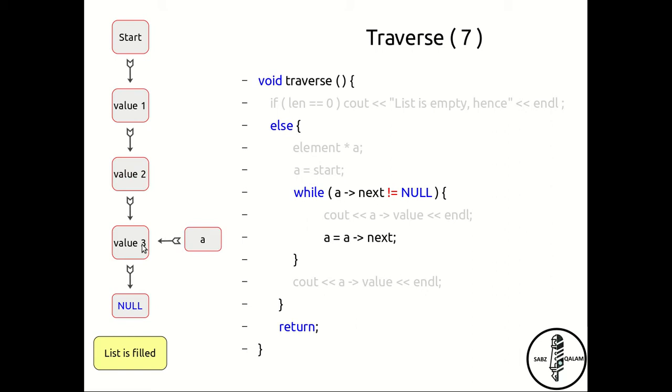Then again you update a, so a is now pointing to the next element. You go back again to the while loop and check: is a->next not equal to null? No, that's not true, because a->next is equal to null. So you end the while loop and you come outside. Notice as you finish the while loop and come outside, you haven't really printed value three.